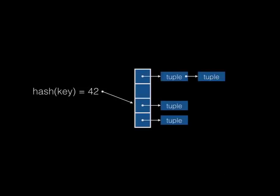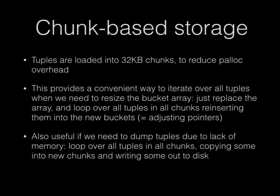In memory it looks like an array where you hash your key to produce a number and find the right slot, with a chain of tuples in each bucket. The hash join operator loads tuples into chunks of memory, which reduces the overhead of individual allocations. Those chunks also provide a convenient way to iterate over all the tuples when we need to do a couple of different operations.